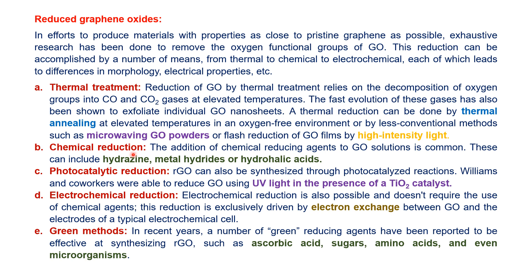In chemical reduction, chemicals such as hydrazine, metal hydride, and hydrohalic acid are used. In photocatalytic reduction, graphene oxide is reduced to reduced graphene oxide using UV light in the presence of a catalyst such as titanium oxide. In electrochemical reduction, electron exchange at the electrode surface results in the reduction of graphene oxide to reduced graphene oxide. Green methods using ascorbic acid, sugar, amino acids, or even microorganisms can also convert graphene oxide into reduced graphene oxide.